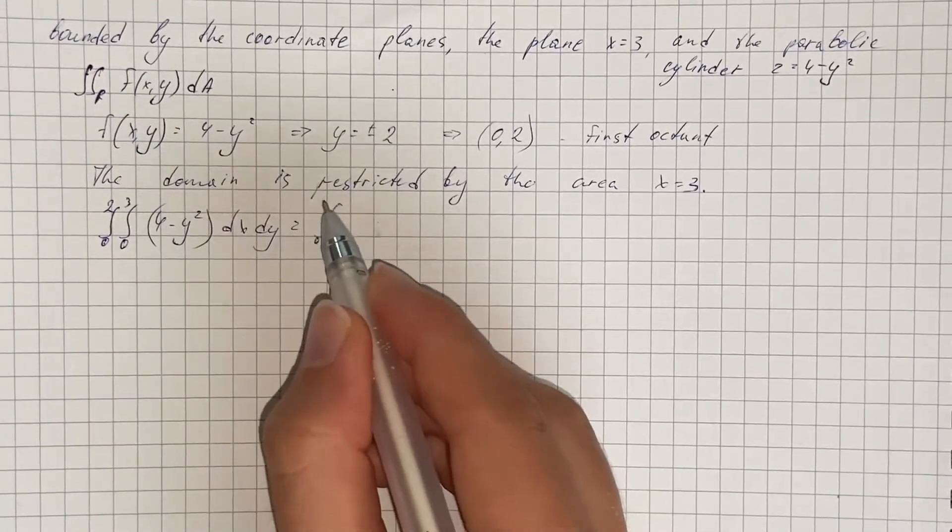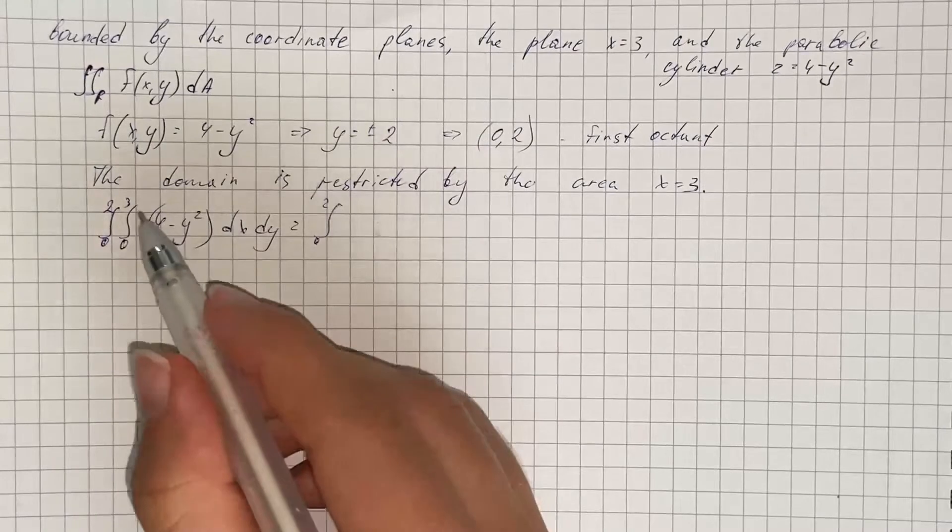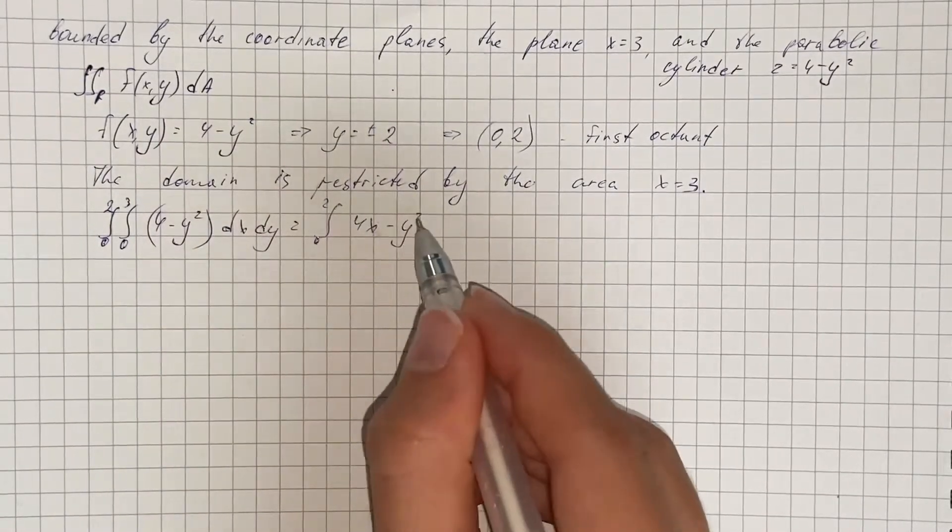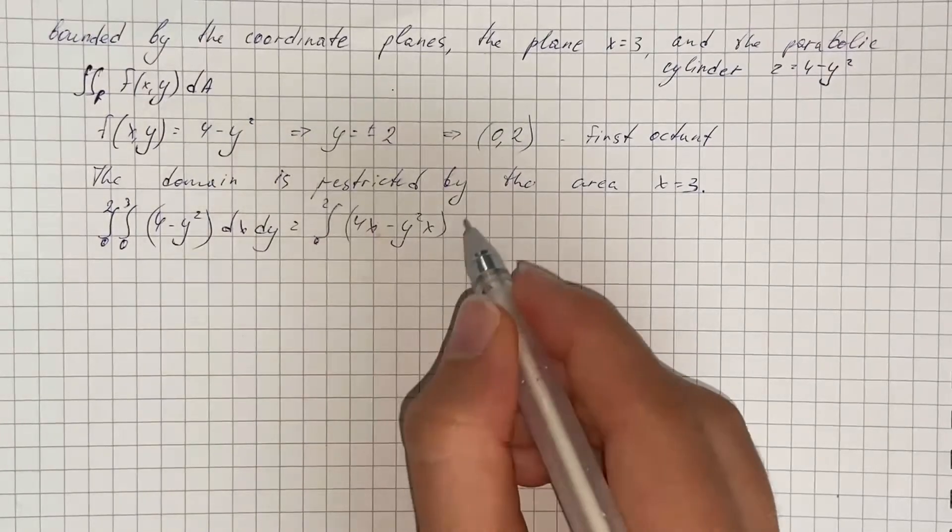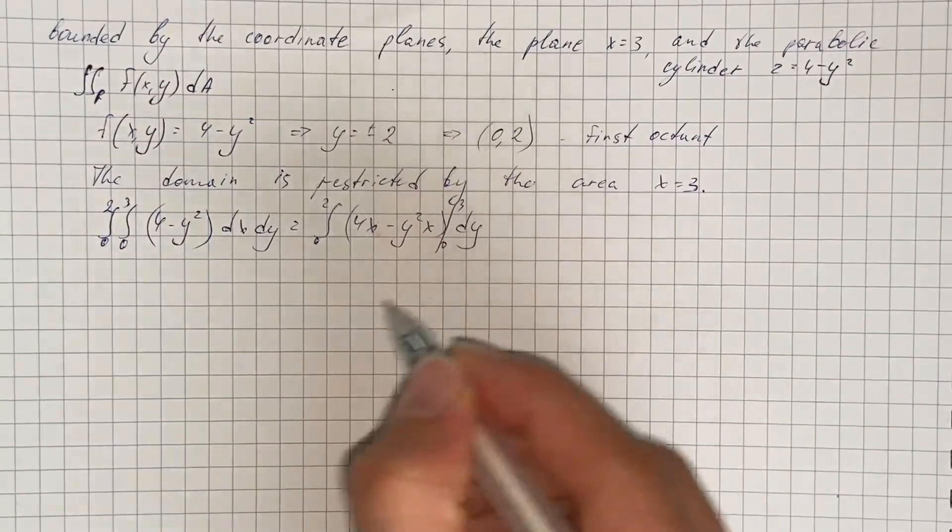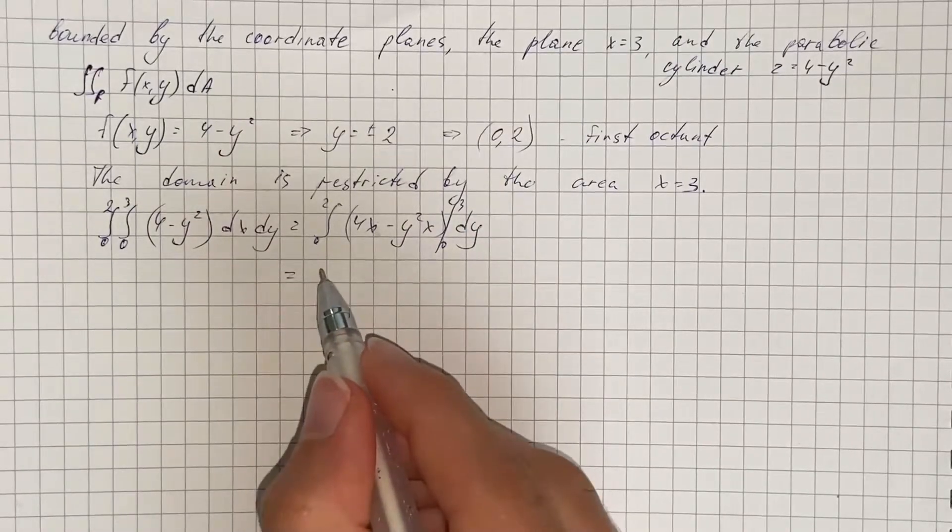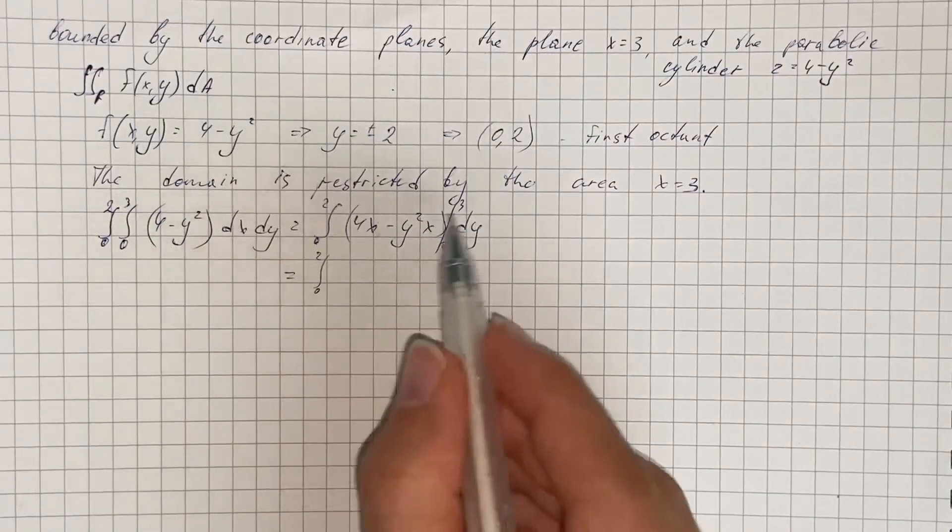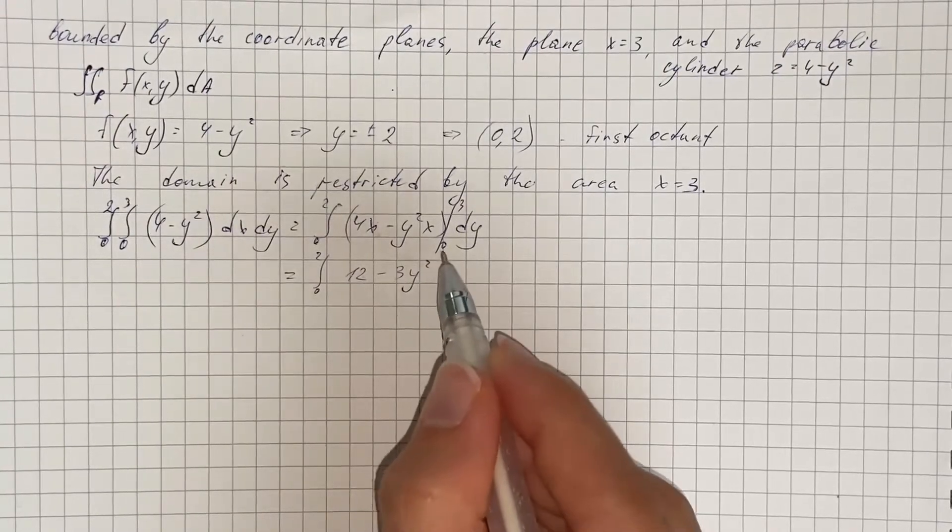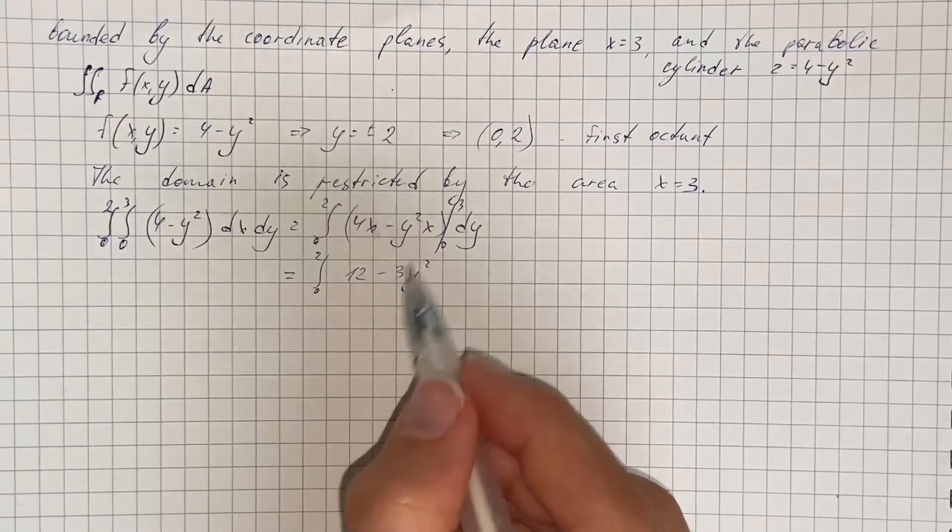So first we're going to evaluate the first integral which is inside. And that's going to be 4x minus y squared x, evaluated at 3 and 0. So we substitute 3 and get 12 minus 3y squared. And if we substitute 0 we get 0.